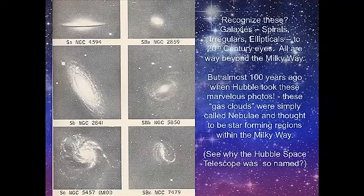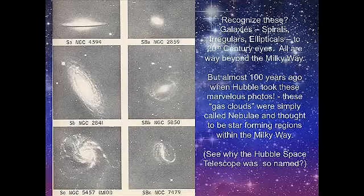Here we have a series of images. With 21st century eyes we instantly recognize spiral galaxies, irregular galaxies, elliptical galaxies, all way beyond the Milky Way - we take this for granted, we learn it in grammar school. But almost 100 years ago when Hubble took these incredible photos - which are marvelous even now - they did not know what they were looking at. They really thought these nebulous-looking images were embedded within our own Milky Way and were simply star-forming regions. The Hubble Space Telescope was named after Edwin Hubble because of the work he did.